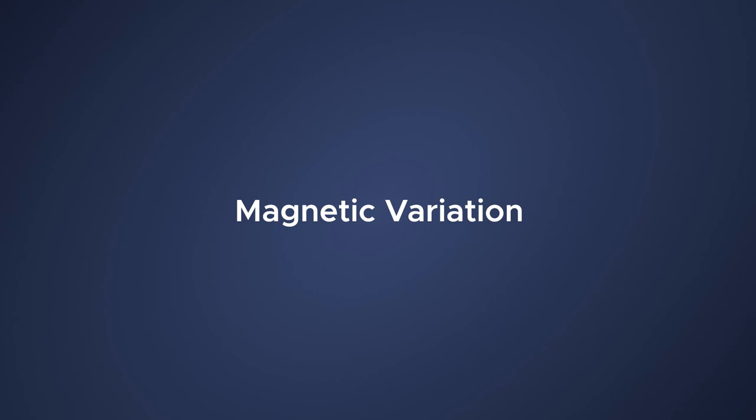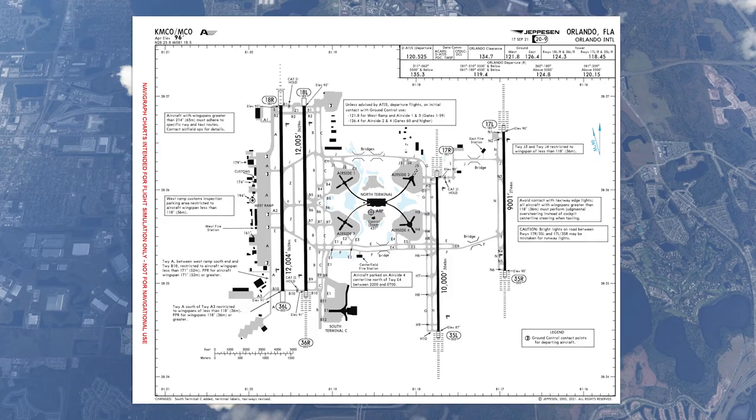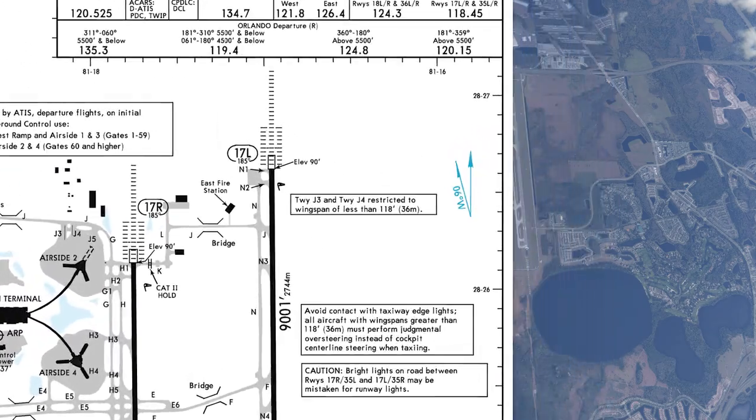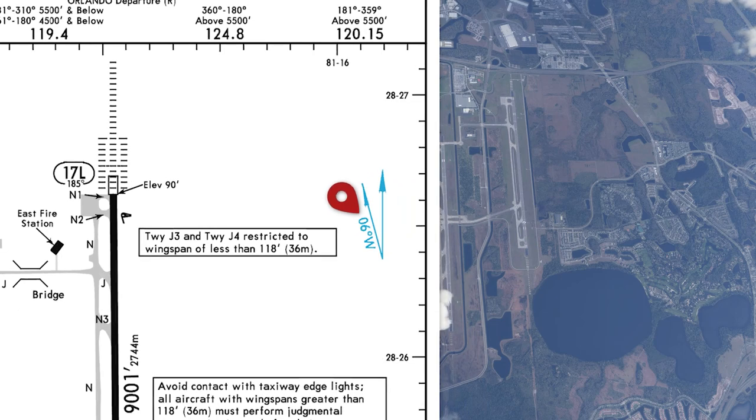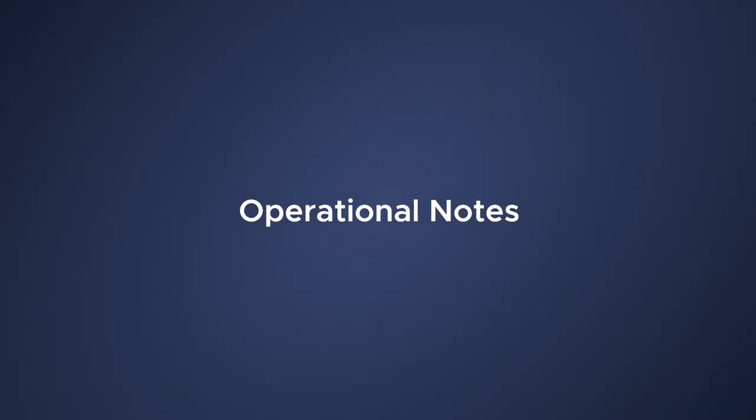The airport magnetic variation is graphically depicted as well. In this particular case, it's actually six degrees west. There are actually a lot of notes depicted around this chart in Orlando. We're going to pull a few of these notes out and I'll show you what they say — just a few, there's a ton of them.